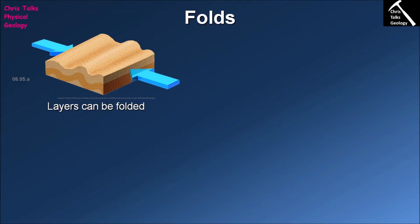The first thing to remember about folds is that they represent ductile deformation. When we have a sequence of rocks exposed to a compressive stress — the rocks are being squished — a couple of things can happen. In the brittle zone, rocks can fail through cracking, leading to the formation of joints and faults. However, once we're below about 10 to 15 kilometers in the Earth's crust, we've transitioned into the ductile zone.